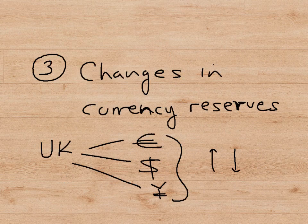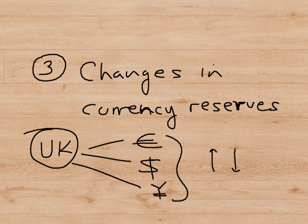Lastly, there are changes in currency reserves. The UK holds reserves of other currencies such as the euro, the dollar, and the Japanese yen. As these reserves go up or down, there are corresponding cash inflows and outflows into the UK.